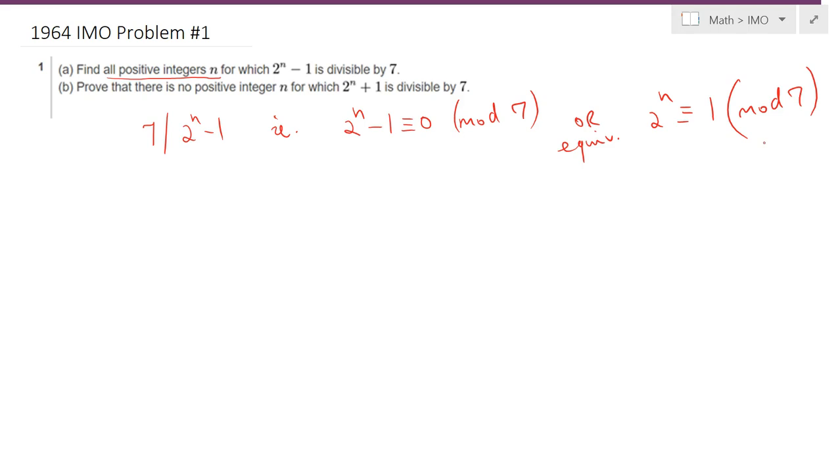Let's try a couple of numbers for different values of n. In mod 7, let's check the powers of 2. So 2 to the first power is congruent to 2 in mod 7, 2 squared is congruent to 4, 2 to the third power is 8, which is 1 in mod 7.